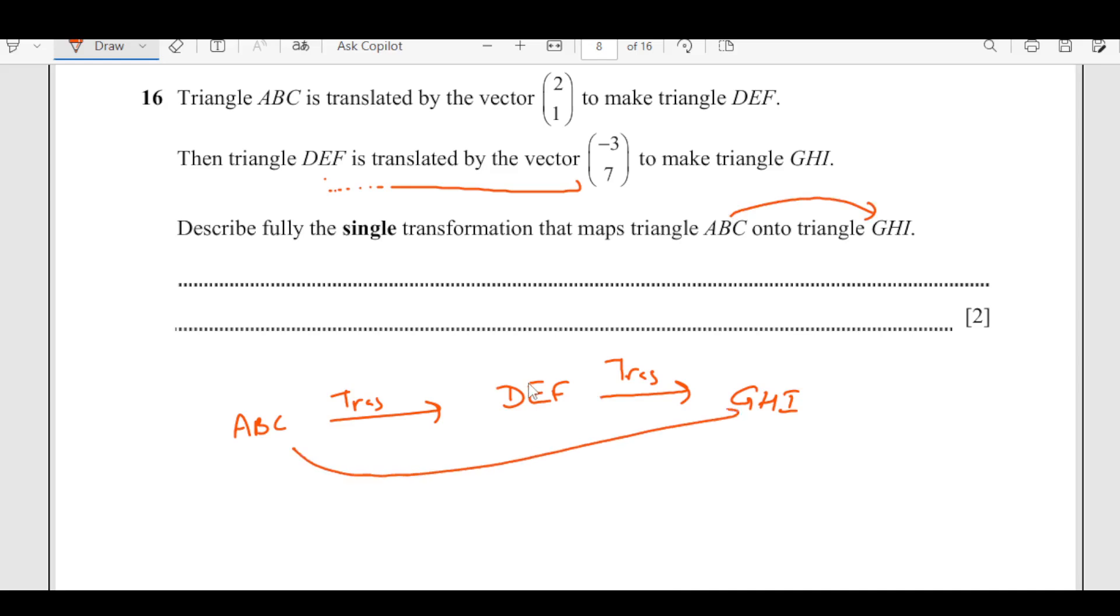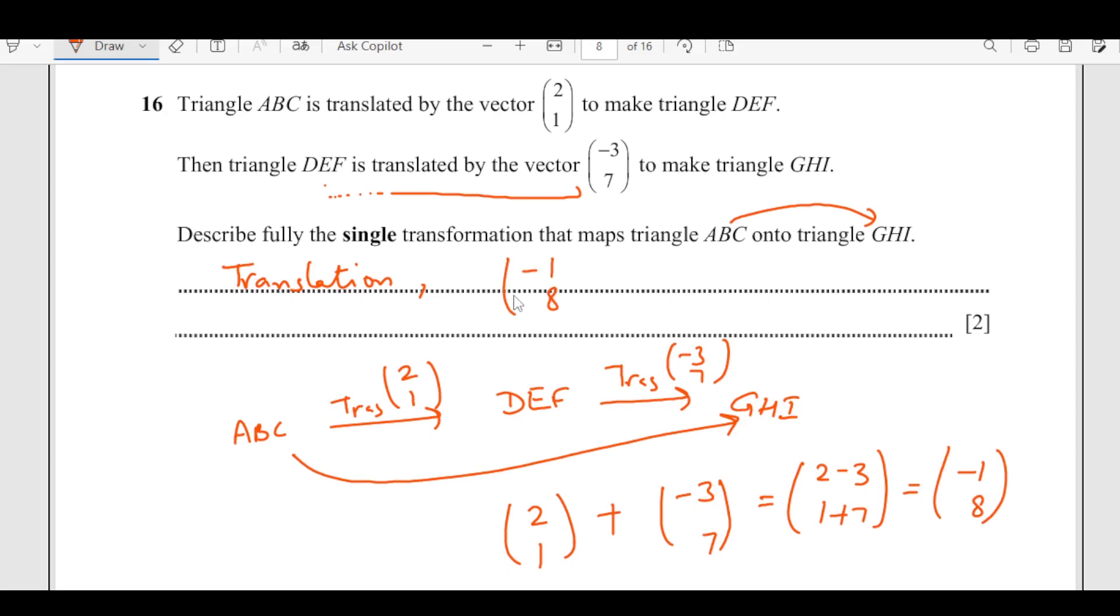Obviously, this is a translation. It is a translation by, we will see first, this is 2,1 and then it is negative 3 and 7. So we are just going to add that. This is 2,1 plus negative 3 and 7. This is going to become 2 minus 3 and 1 plus 7. So this comes out to be negative 1 and 8.